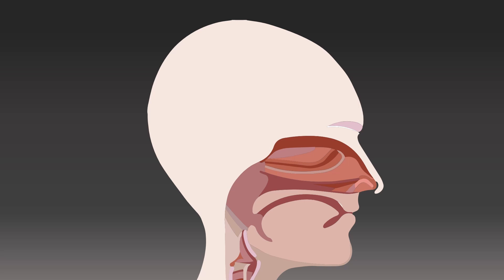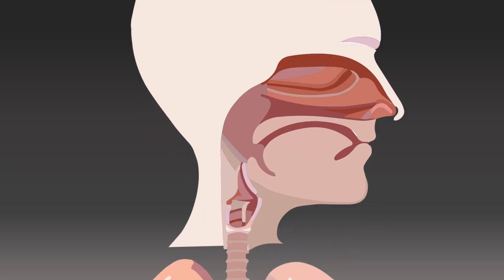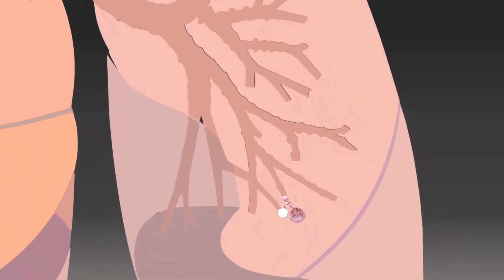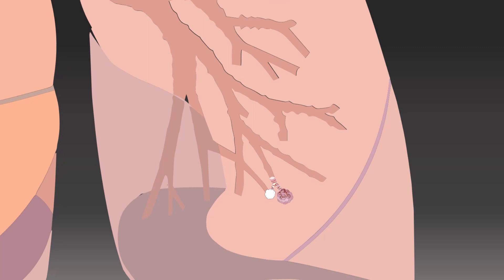First we need to discuss how oxygen enters the body and is transported to the tissue or cell to be used. Oxygen enters the body when we breathe — this is called respiration. We breathe through our nose and mouth, taking 16 to 20 breaths per minute, about 11,000 liters of air per day. The air travels through the trachea, bronchus, and bronchioles before it reaches our alveoli, where gas exchange takes place.